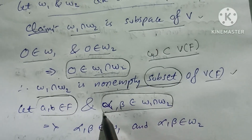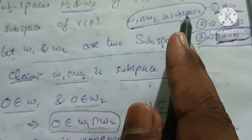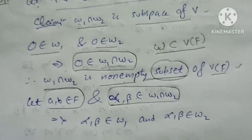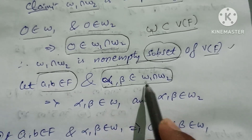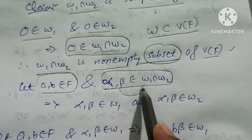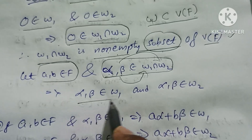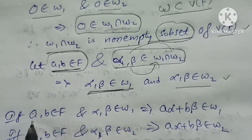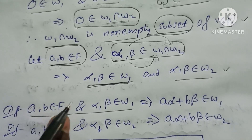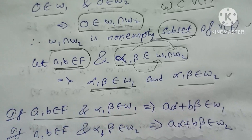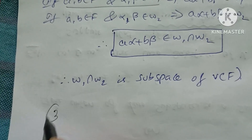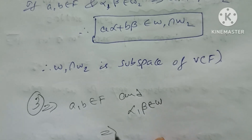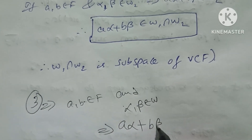What we have to prove is that W1 intersection W2 is a subspace. Since alpha and beta belong to W1 intersection W2, we have alpha and beta belonging to W1, and alpha and beta belonging to W2. With a, b in F and alpha, beta in W1, we get a·alpha plus b·beta belongs to W1. Similarly, with a, b in F and alpha, beta in W2, we get a·alpha plus b·beta belongs to W2.